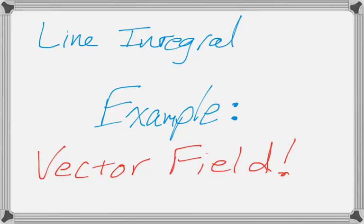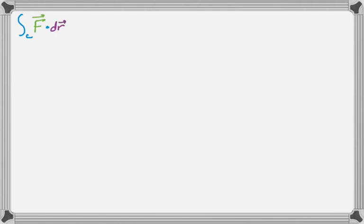We're going to do an example of a line integral of a vector field. What we want is the line integral of the vector field f dot dr, where r is our parametrically defined curve. That's going to be the integral from a to b, and those are going to be t values eventually.